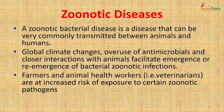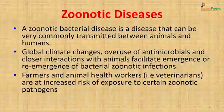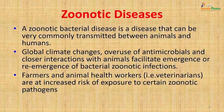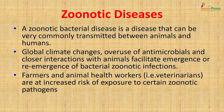What is a zoonotic disease exactly? A zoonotic disease is one that can be very commonly transmitted between animals and humans. Globally, climate changes, overuse of antimicrobials, and closer interaction with animals have facilitated the emergence and re-emergence of bacterial zoonotic infections, which we are seeing more commonly because of close interaction between humans and animals.